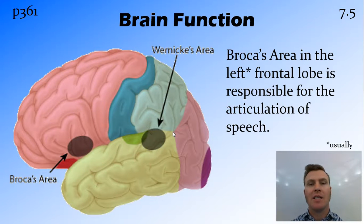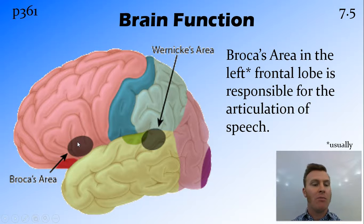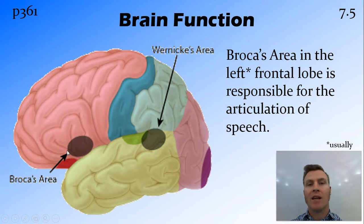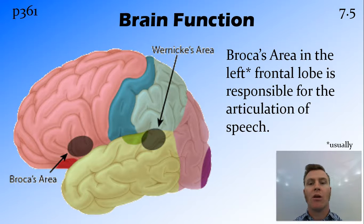Two areas we need to know about for communication are Broca's area and Wernicke's area. Broca's area is on the frontal lobe, and it's usually on the left side for most people. This area controls basically the muscles in the mouth, as well as a little bit of breathing, so that it can control speech, articulation, and actually making speech.